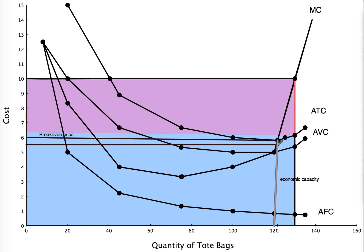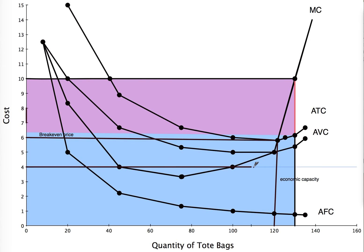At $5.50 we identify that we have an economic loss, but we are still above the average variable cost curve. As long as you are above the average variable cost curve, you can still afford to pay your workers. If the price is below the average variable cost curve — for example, if the price was $4 — we can see that we intersect the marginal cost curve at 100 tote bags and that we are below both the average variable cost and average total cost.